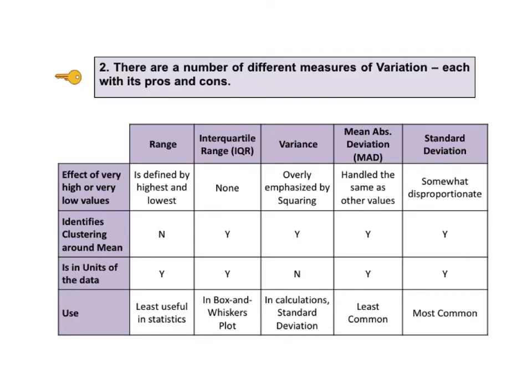There are a number of measures of variation, and different measures are useful for different purposes. Here are five common measures: range, interquartile range or IQR, variance, mean absolute deviation (MAD), and standard deviation. We'll describe each one in turn.